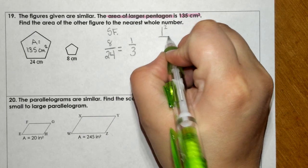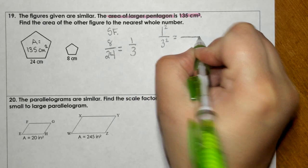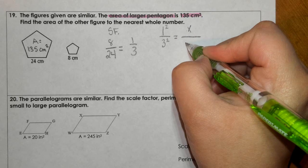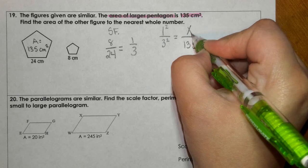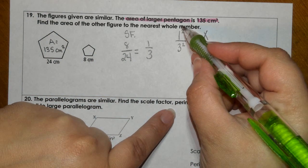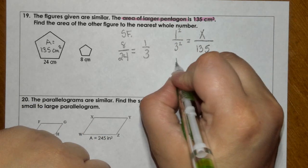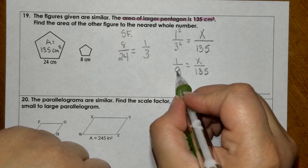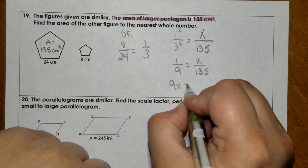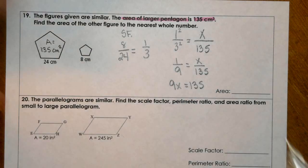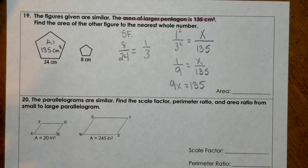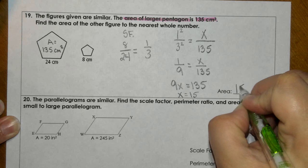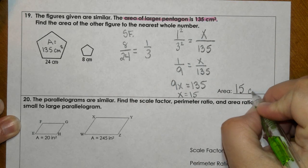Since I am given the area of the bigger figure, I need to find the area of this one. So I need to change the scale factor to area ratio. So now I say 1 squared and 3 squared. Now I'm in area. I don't know the small area. I know the big area is 135. So before I cross multiply, I need to calculate 1 squared and 3 squared. So then I've got 9x equals 135, and if I take 135 divided by 9, we get a whole number of 15. So in this case, I don't have to round. So the small figure is 15 centimeters squared.